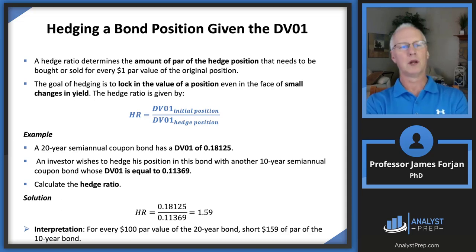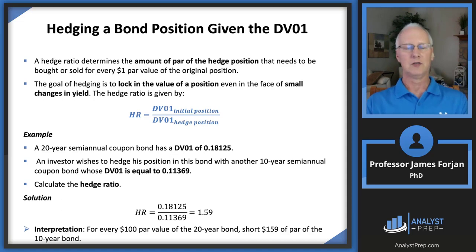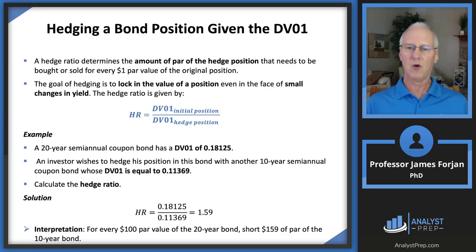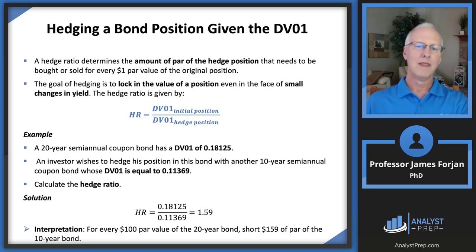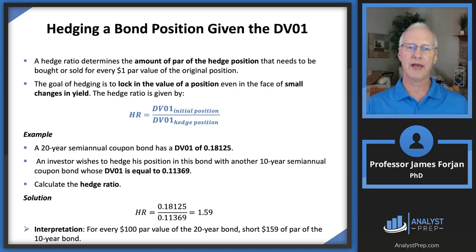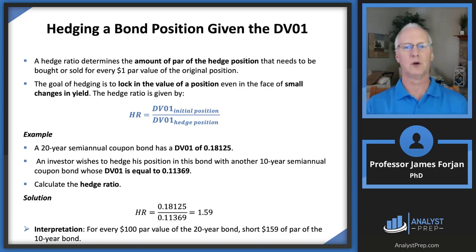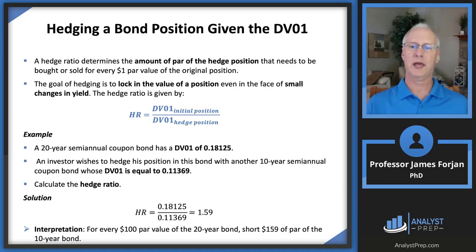As a bondholder, we're going to operate in two different securities by taking two different positions: we'll own one bond and short another bond. We're essentially betting against ourselves. The farmer doesn't know whether they'll win in the spot market, but whatever happens there can be offset in the futures market — gains in one exactly offset by losses in the other. That's the nature of hedging. The hedge ratio measures sensitivities between two securities.